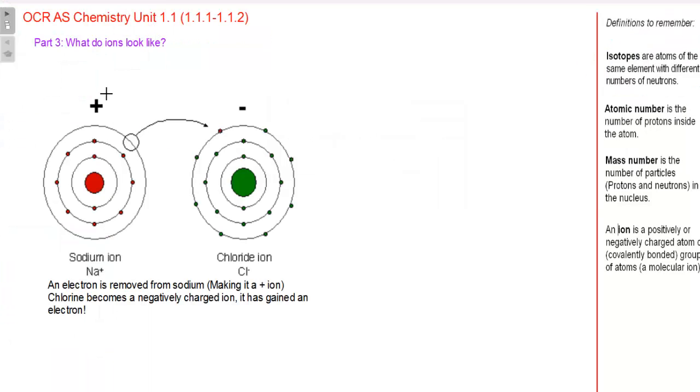Ions are just charged particles that have had an electron either removed, positively removed, so we'll put it removed here, and negative for electron gained.